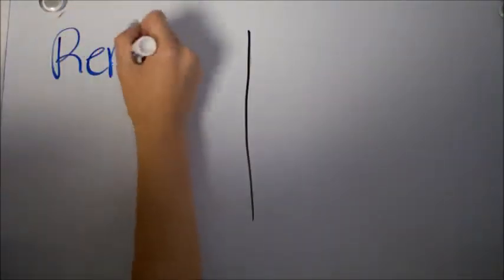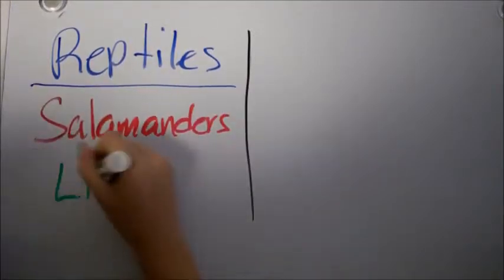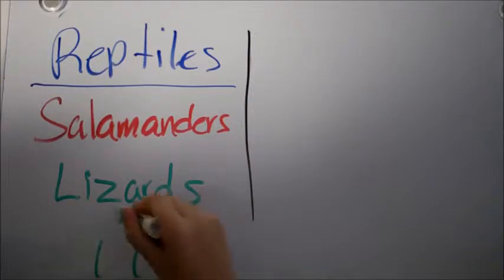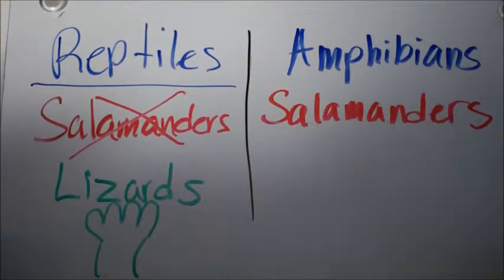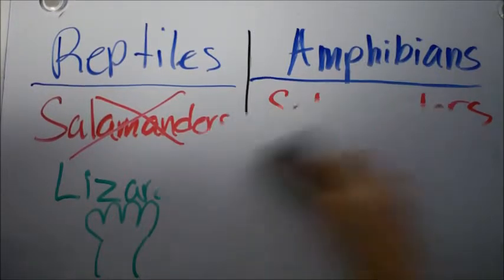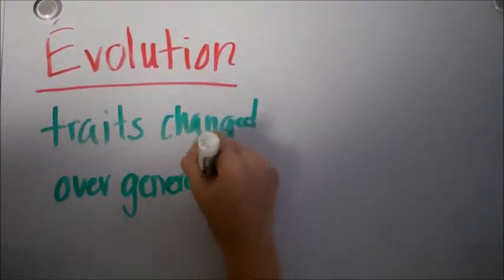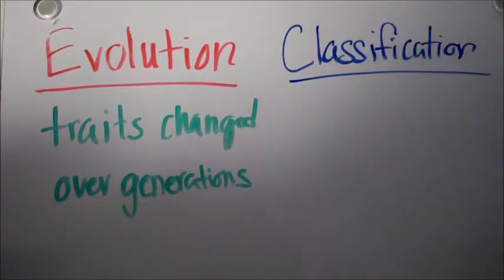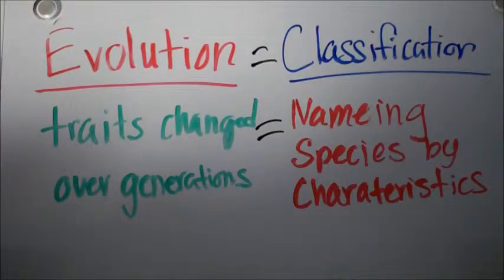So because of that, their classification had to be changed. They used to be reptiles with lizards and stuff like that that had regular feet. But then were moved to amphibians because of their webbing feet, just like frogs. Evolution, again, is traits changed over generations. And if classification is naming species by its characteristics, well, it kind of works out because traits, characteristics, you get my drift.